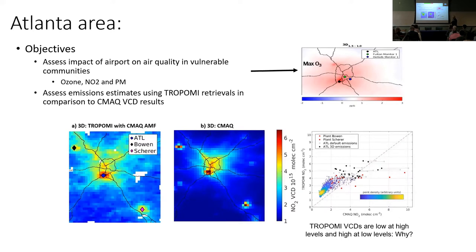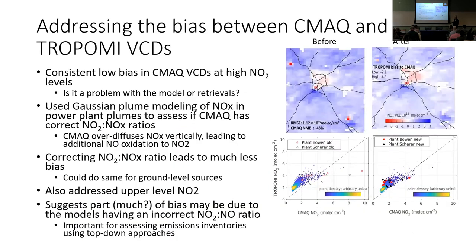One of the things brought up was that the TROPOMI vertical column densities were low at high levels and high at low levels. We looked at that, and one of the multiple reasons is that the NO2 to NOx ratios — particularly in the dense plumes — are not right in the models. The models are converting too much NO to NO2. This explains at least part of the low bias in observations and can be attributed to a modeling issue that is over-diffusing the plume too quickly.